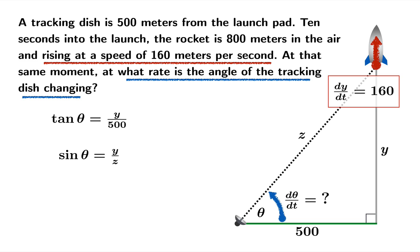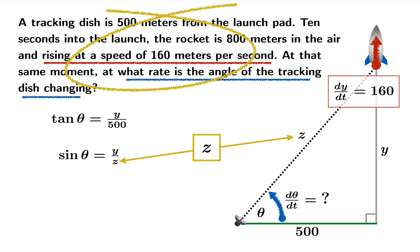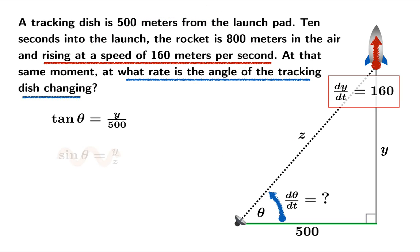Now, it is true that the sine of theta is equal to y over z. That relates theta and y as well. But that's not so great because we're introducing a new variable, z, into the picture. And it's really not so obvious from the statement where z even shows up at all. Let's go with the first one because that's the most direct way to relate y and theta.